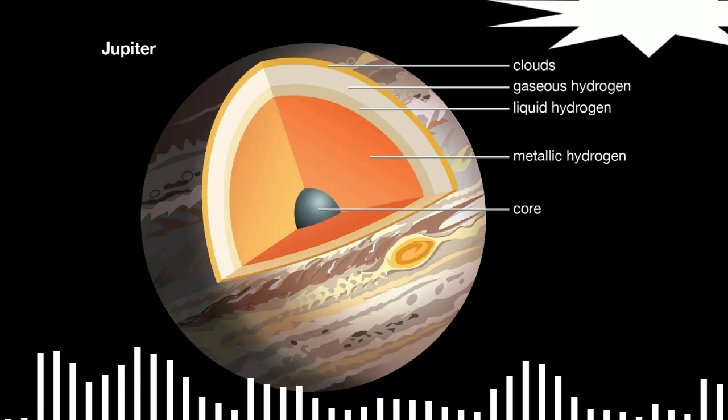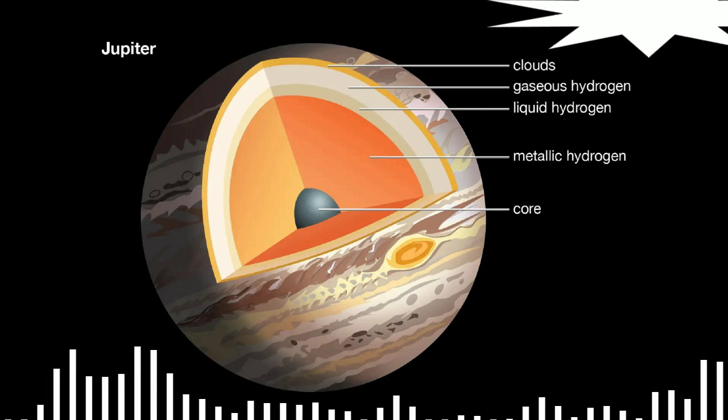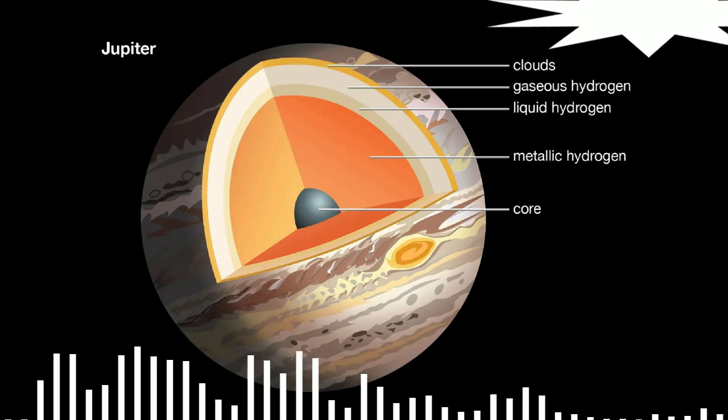Metallic hydrogen is believed to exist in the cores of large gas giants in our solar system, including Jupiter and Saturn, as well as in a hydrogen envelope near the Sun's core.